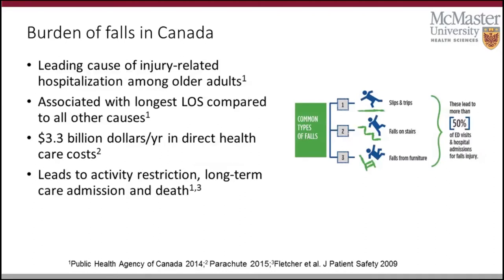Falls are arguably one of the most costly and important public health concerns facing older adults. They're the leading cause of injury-related hospitalization among older adults, and when an older adult is hospitalized because of a fall, it's associated with the longest length of stay compared to all other causes. In direct health care costs alone, falls cost the Canadian health care system $3.3 billion every year. At an individual level, falls lead to a downward spiral of activity restriction, further increase in risk of falls, long-term care admission, and mortality. With the aging population expected to increase, these numbers are expected to increase as well.